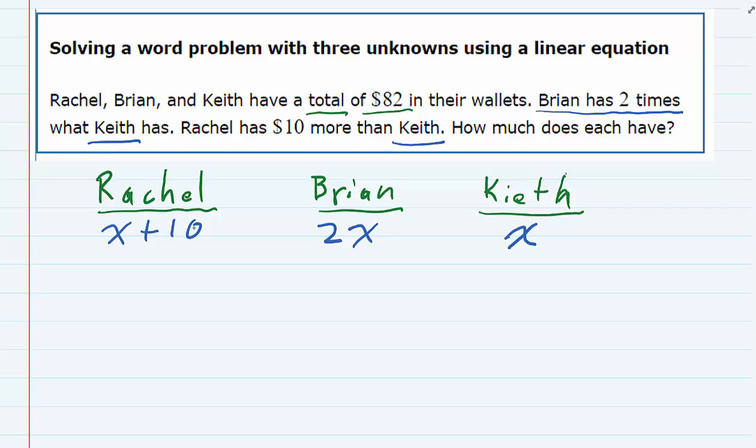These three expressions are the key to solving it because we're told that the total is $82. So if I add these up, I would have X plus 10 for Rachel, plus 2X for Brian, plus X for Keith, and the total would be $82.